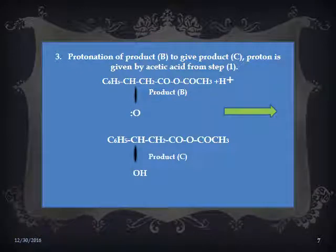This is the third step of Perkin reaction. In this step, protonation of product B gives product C. The proton is given by acetic acid from step one. So in this step, product B gets a proton from acetic acid and converts into product C: C₆H₅CH(O⁻)CH₂COOCOCH₃ (product B) becomes C₆H₅CH(OH)CH₂COOCOCH₃ (product C).